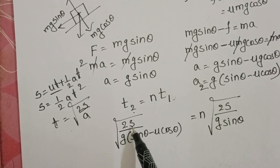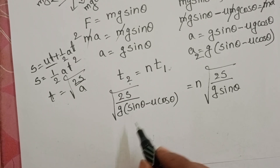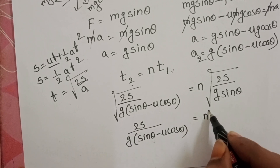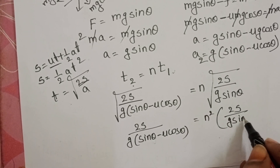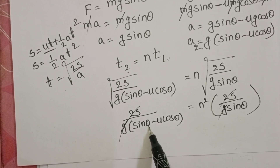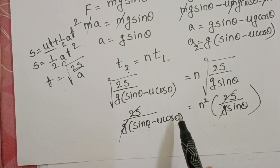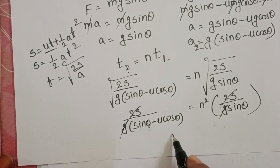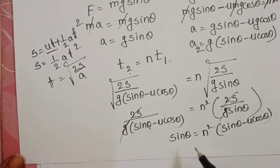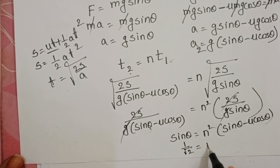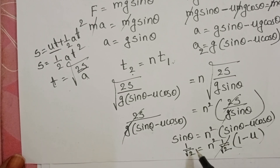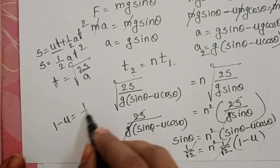The length S of the inclined plane is the same in both cases. Squaring both sides: 2S / g(sin θ − μ cos θ) = n² · 2S / g sin θ. The 2S and g cancel from both sides. Since θ = 45°, sin 45° = cos 45° = 1/√2. After cross multiplication: sin θ = n²(sin θ − μ cos θ). Substituting 1/√2 for both, the 1/√2 cancels, giving 1 = n²(1 − μ).